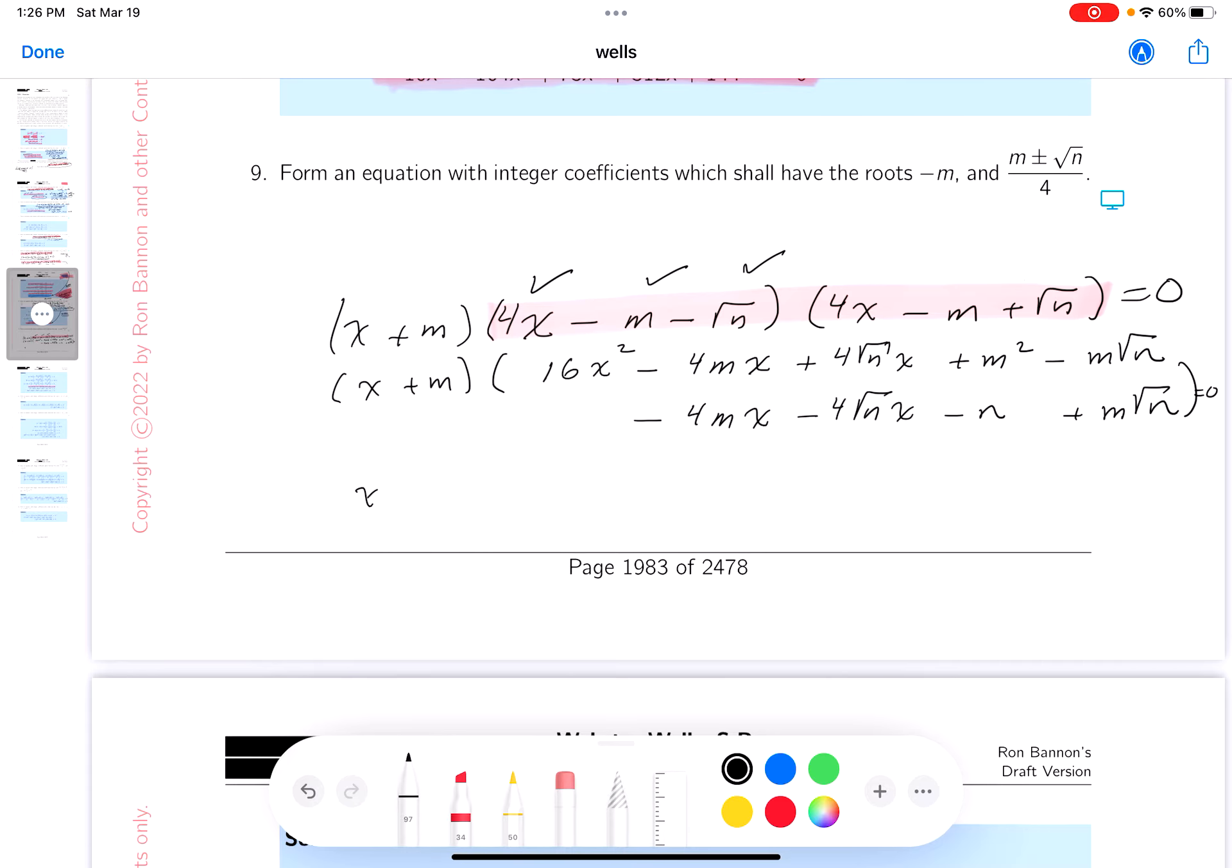Let's do that. x plus m. 16x squared. Minus 8mx. Well, these guys disappear. And these guys disappear. And what do you get? Plus m squared. Minus n. Equals 0.